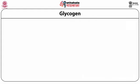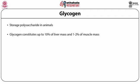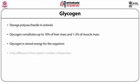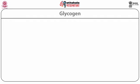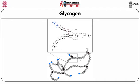Glycogen is a storage polysaccharide in animals. It constitutes up to 10 percent of liver mass and 1 to 2 percent of muscle mass, and serves as stored energy for the organism. Its only difference from starch is the number of branches; glycogen has alpha-1,6 branches every 8 to 12 residues, similar to amylopectin. The main chain has alpha-1,4 linkages between glucose units, while alpha-1,6 linkages create the branching. Glycogen gives a red-violet color with iodine.